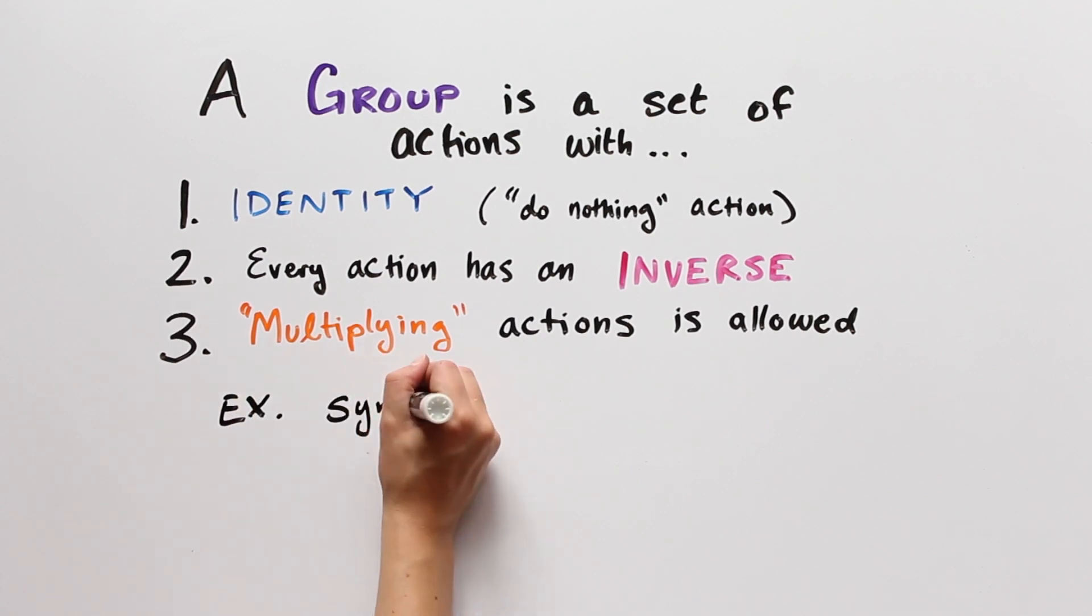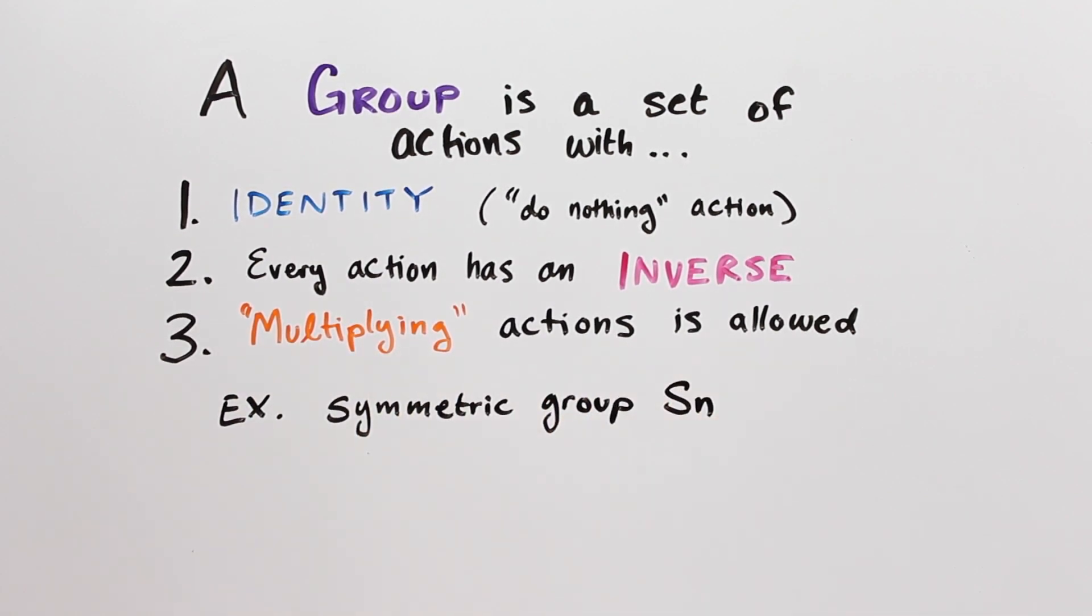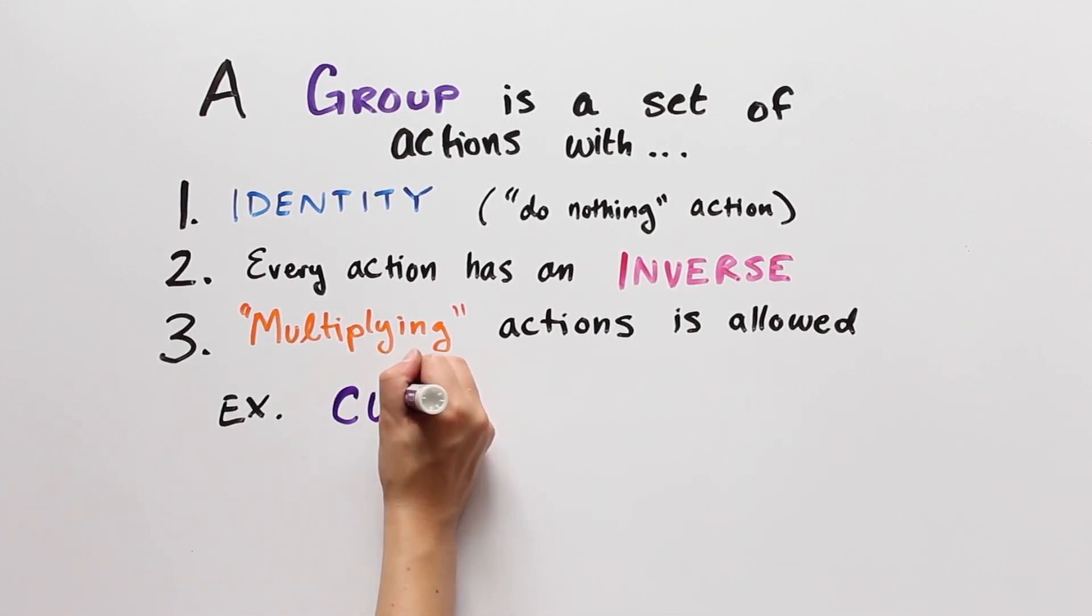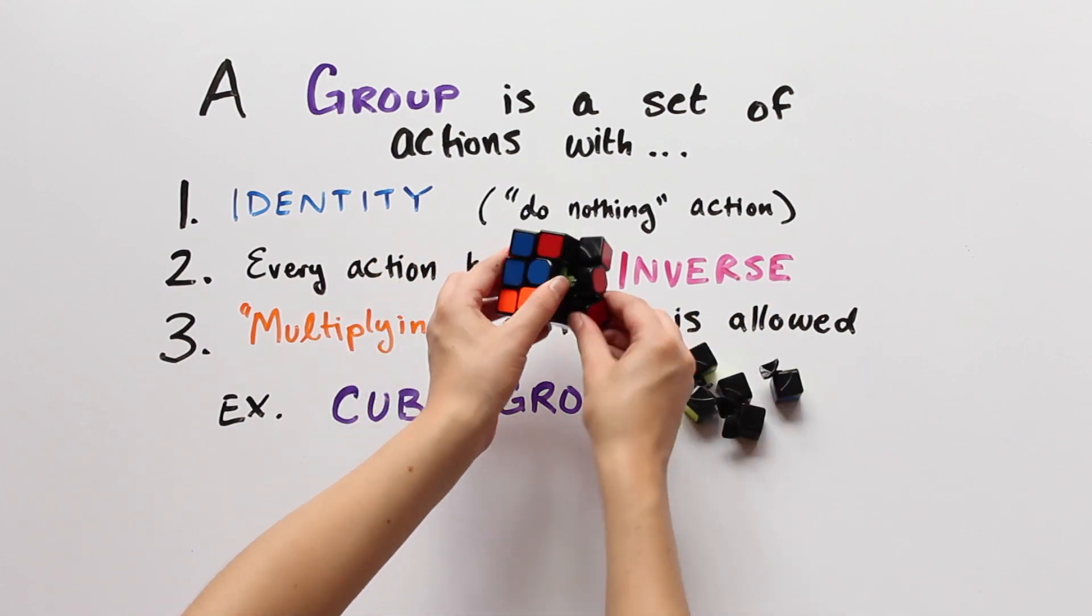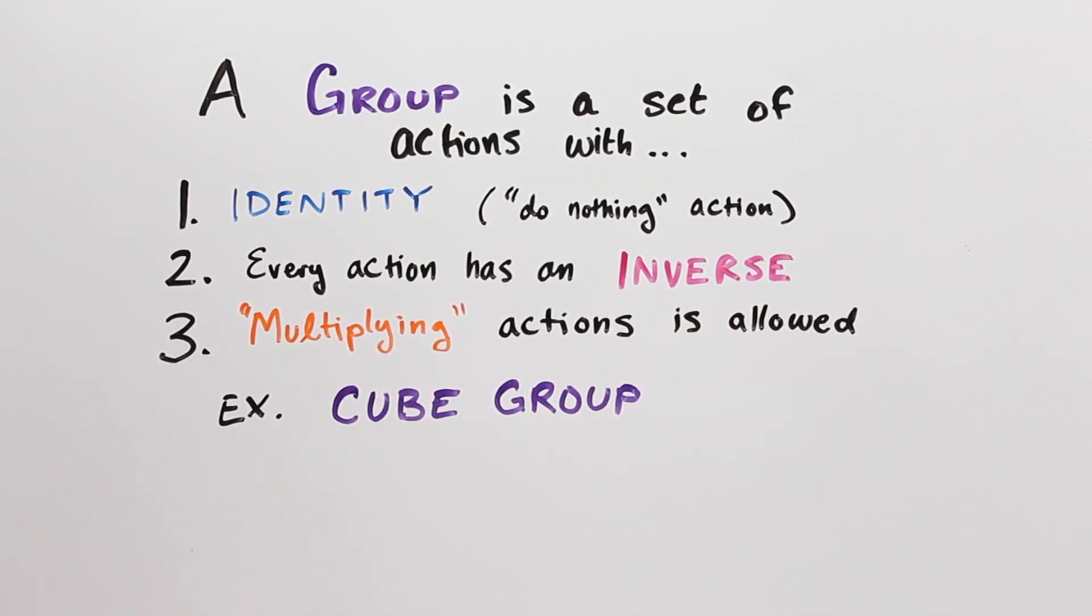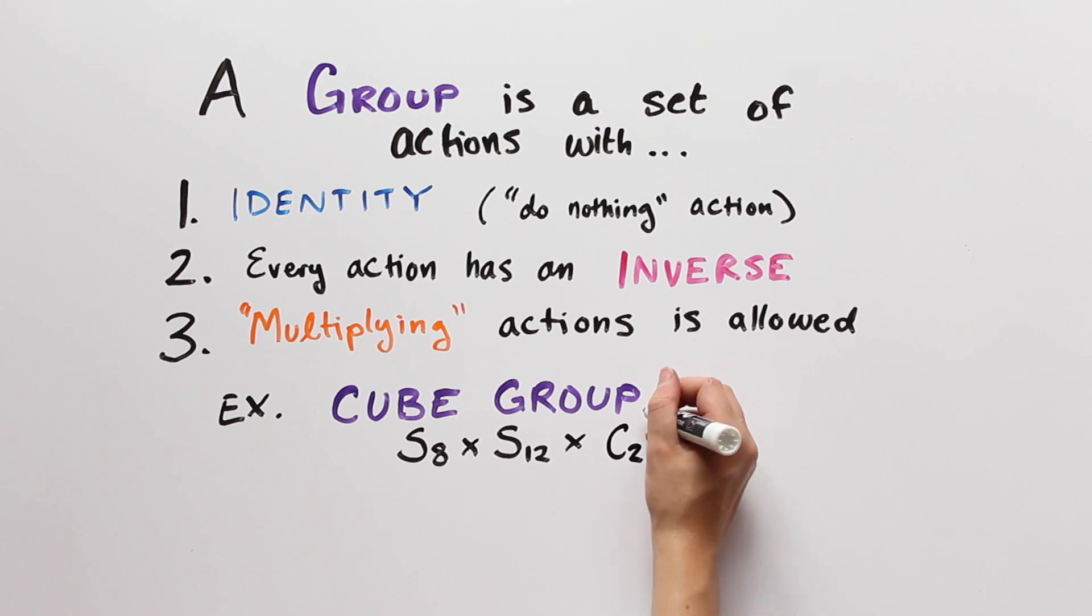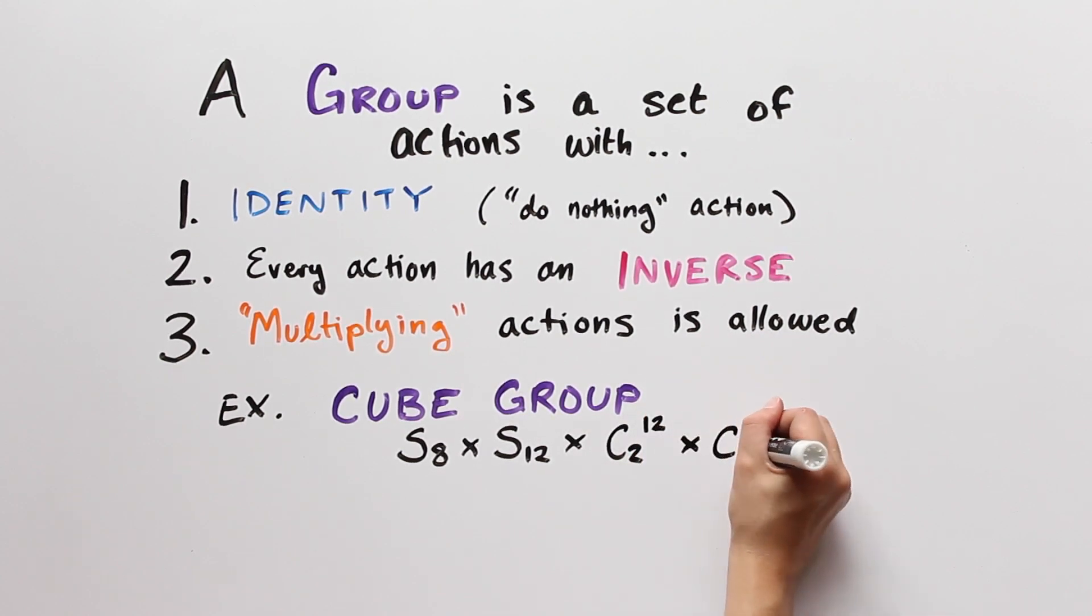So the symmetric group Sn is an example of a group where the actions are permutations, and we investigated this a lot in part one. Another example is the set of all rearrangements of the cube, as you might have guessed. We will call this the cube group. For those of you familiar with group theory, the cube group is isomorphic to S8 cross S12 cross 12 copies of C2 cross 8 copies of C3. If that's gibberish to you, don't worry about it.